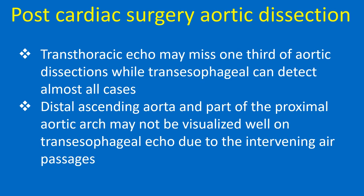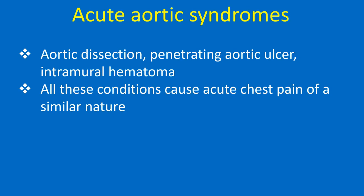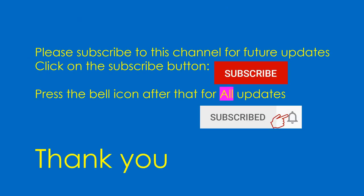Acute aortic syndromes include aortic dissection, penetrating aortic ulcer, and intramural hematoma. All these conditions cause acute chest pain of a similar nature.